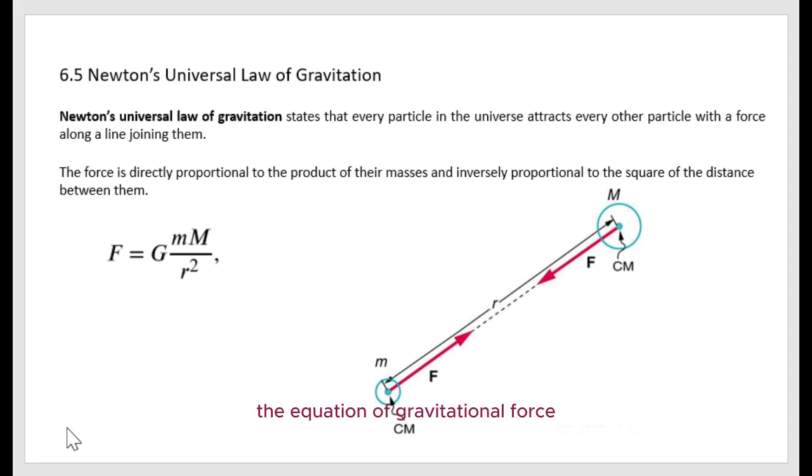The equation of gravitational force equals gravitational universal constant times first mass m, second mass capital M, divided by r squared.